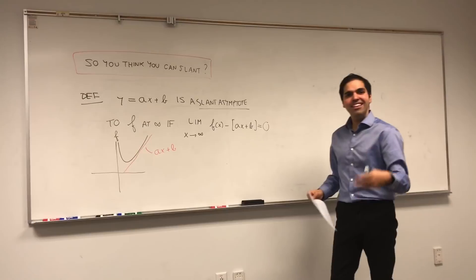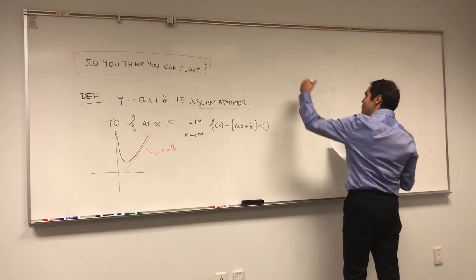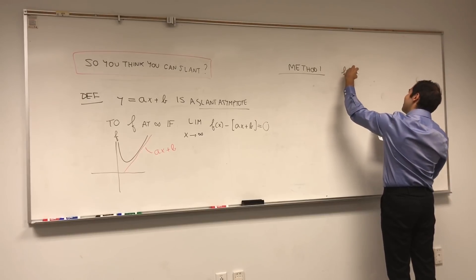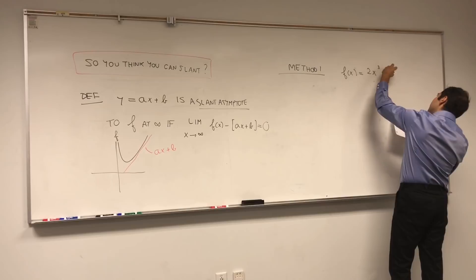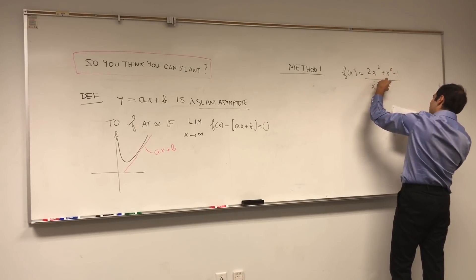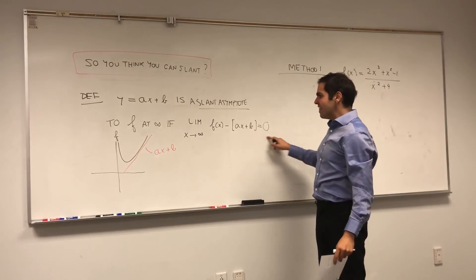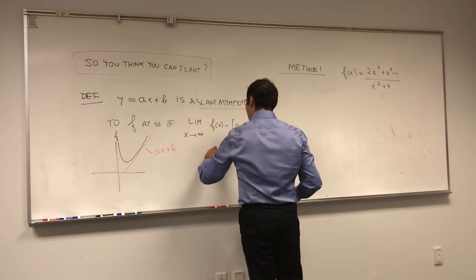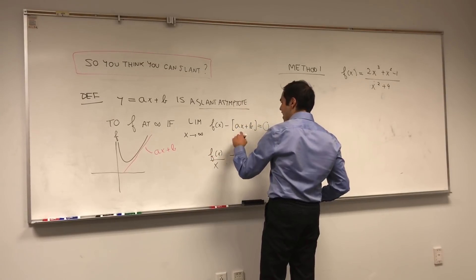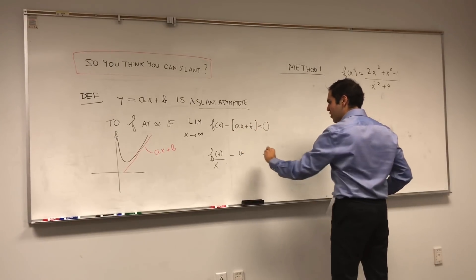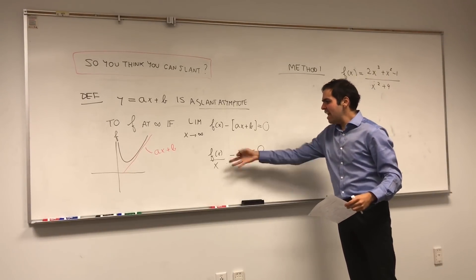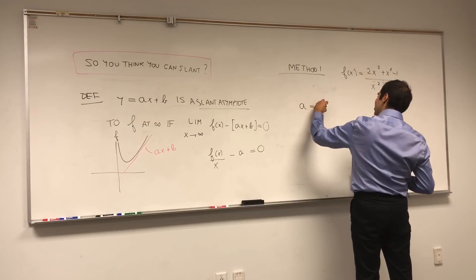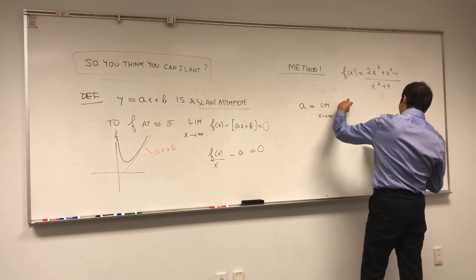Today I will show you a bunch of methods for finding slant asymptotes. Here's the most systematic one — Method 1. Suppose f(x) equals 2x³ + x² − 1 over x² + 4. If you take the equation and divide by x and take the limit, you find that a equals the limit as x goes to infinity of f(x) over x.